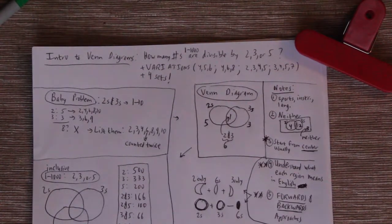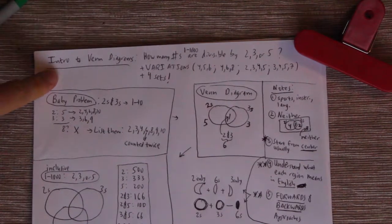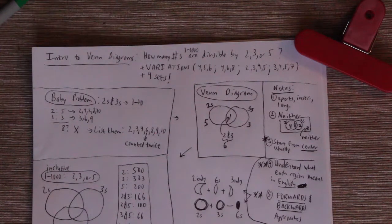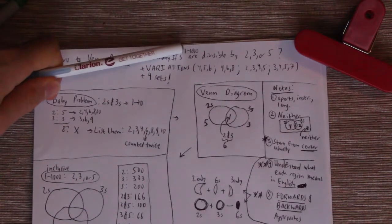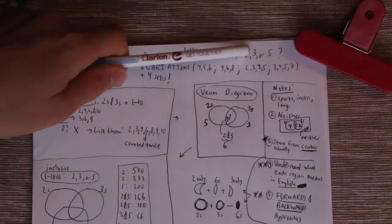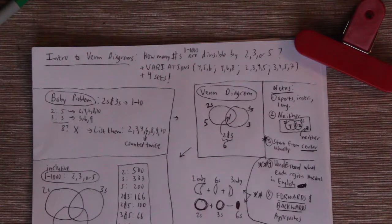Greetings Earthlings. Today we're going to go over an introduction to Venn diagrams and focus specifically on the question of how many numbers between 1 and 1,000 inclusive are divisible by 2, 3, or 5. So let's jump right in.